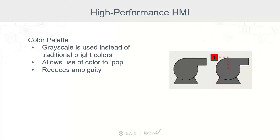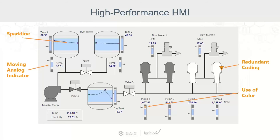Having an HMI that is mostly grayscale gives you a unique opportunity to use color not only to create emphasis, but also to reduce ambiguity. As you can see in the example, you immediately know which of the two pumps has a problem. In a full high-performance HMI example, we're using the sparkline chart for the tank so we can see how things are trending. We could apply sparkline charts even more broadly — for flow meters, pumps, and other elements.